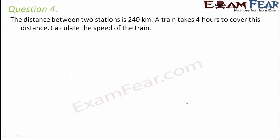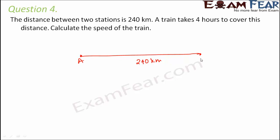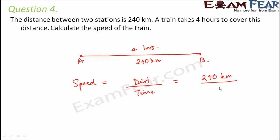Question number four: the distance between two stations is 240 kilometers and a train takes four hours to cover this distance. Calculate the speed of the train. Speed equals distance traveled divided by time taken. Distance is 240 kilometers and time is 4 hours, so 240 divided by 4 equals 60. The speed of the train is 60 kilometers per hour.